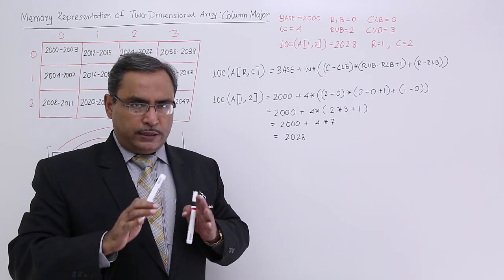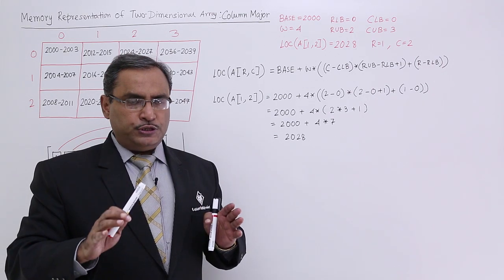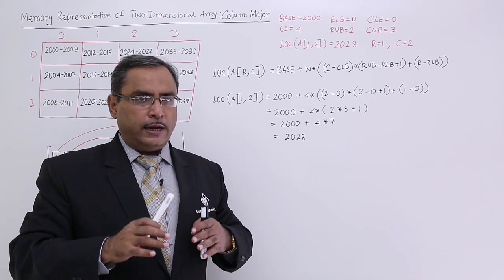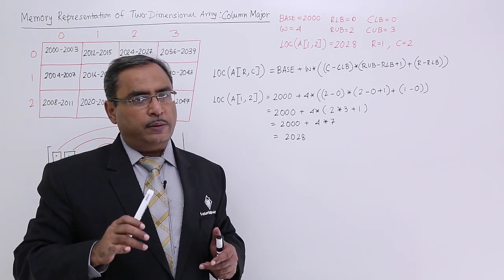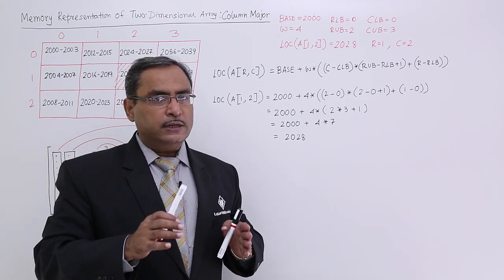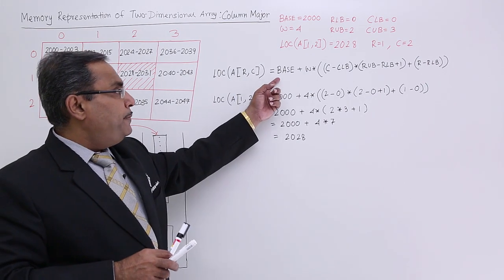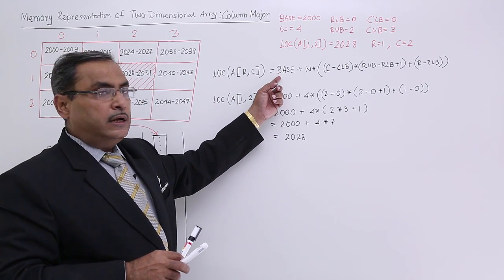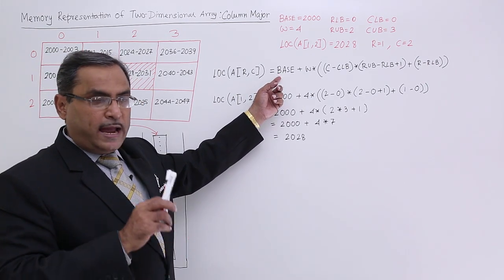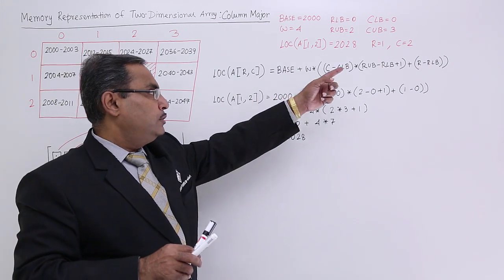Now we are going to write one generic formula with the help of which for any row, any column, I can get the respective starting address in the computer's memory for that very particular cell. So loc of A[R,C] is equal to base of the two-dimensional array plus W into this calculation.